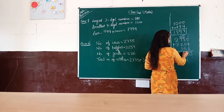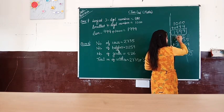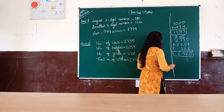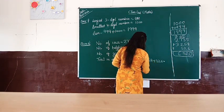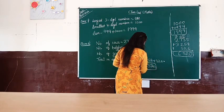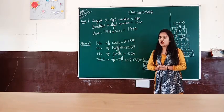Then 7 plus 2 is 9, plus 5 is 14, plus carry 1 is 15, write 5 carry 1. Then 2 plus 3 plus carry 1 equals 6. The total number of cattle equals 6,520.